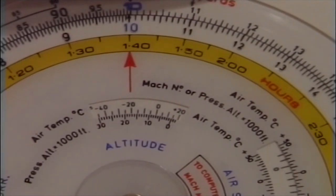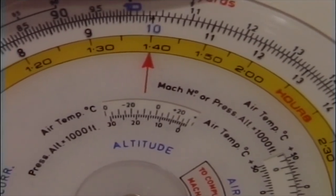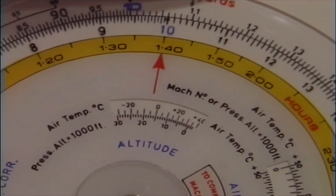If it were warmer, the inner scale moves forward, true altitude becoming higher versus indicated.